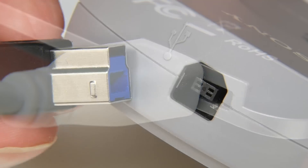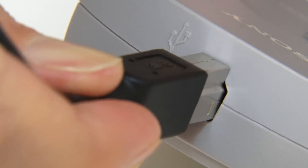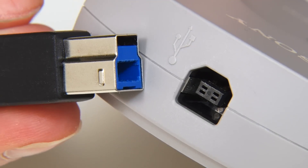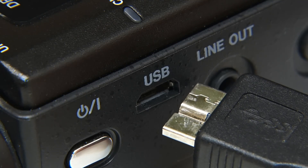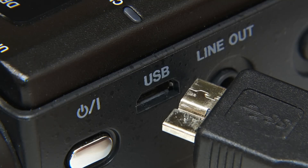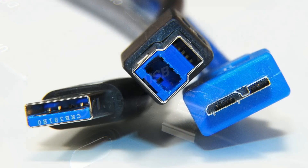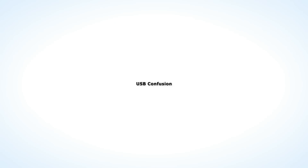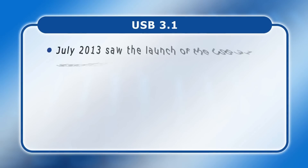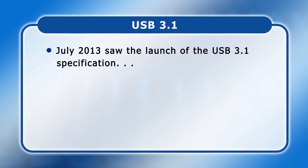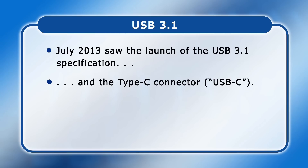Granted, Type B SuperSpeed and Micro B SuperSpeed plugs do not fit in standard Type B and Micro B receptacles. But up until July 2013, USB remained a very clear set of standards. What happened in July 2013 was the launch of the USB 3.1 specification along with the Type C connector, now often referred to as USB-C.